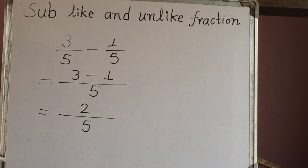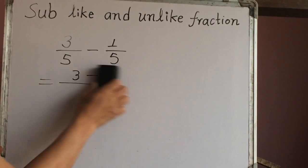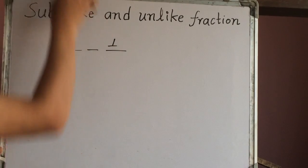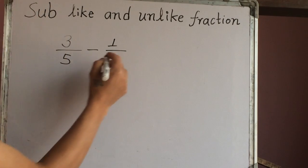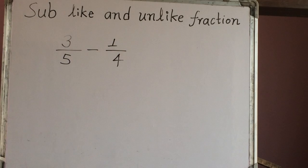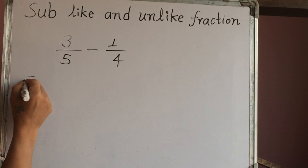Let's see unlike fraction also. Now we have 3 out of 5 minus 1 out of 4. So how can we subtract this one? Let's convert this unlike fraction into like fraction. For that, we write the first fraction.